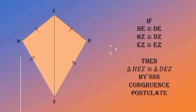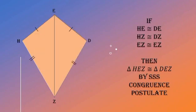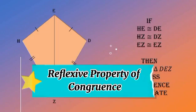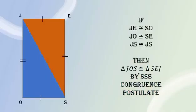We have triangle HEZ and triangle DEZ. As you can see, since the two triangles are connected, they already have one side in common. That side is EZ. So EZ is congruent to EZ by reflexive property of congruence. The other two congruent sides: HE is congruent to DE, HZ is congruent to DZ. Then, triangle HEZ is congruent to triangle DEZ by SSS congruence postulate.